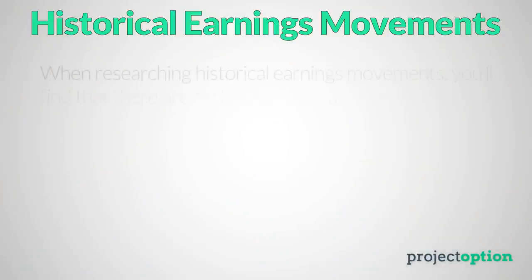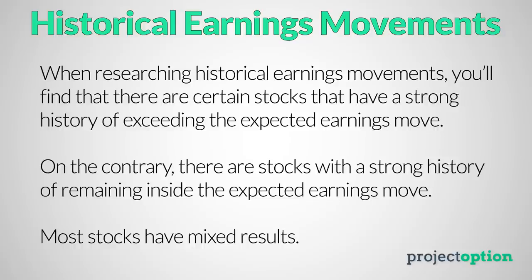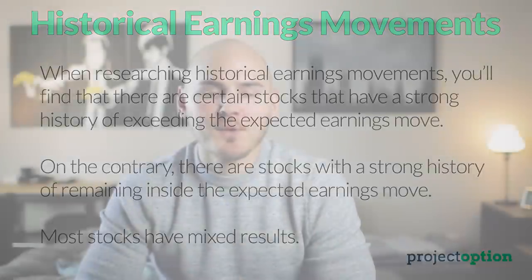When researching stocks and their historical earnings movements, you'll find that some stocks have a strong history of moving outside the expected move — meaning more often than not the stock exceeds what the options imply for its expected range. There are also stocks with a strong history of staying within the expected move. Most stocks will have a mixture of inside and outside, making those more of a coin toss. Even if a stock has a strong history of moving inside the expected move, it could exceed it, and vice versa — so we never know for sure, but historical behavior is valuable to examine.